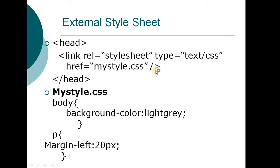Once linked, it will apply the styles from MyStyle.css to the HTML file. Inside MyStyle.css, you write your selectors and declarations. For example: body with background-color light gray, and P — which means paragraph — with margin-left 20px. You set the properties and save the file as a .css file, for example mystyle.css.